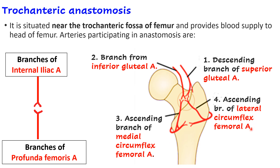From below, the participating branches are from the profunda femoris artery — the ascending branches of the medial and lateral circumflex femoral arteries. The descending branches come from the superior and inferior gluteal arteries above. If there is any block in the external iliac artery or femoral artery prior to the origin of the profunda femoris, collateral circulation can occur and blood can still reach the lower limb.